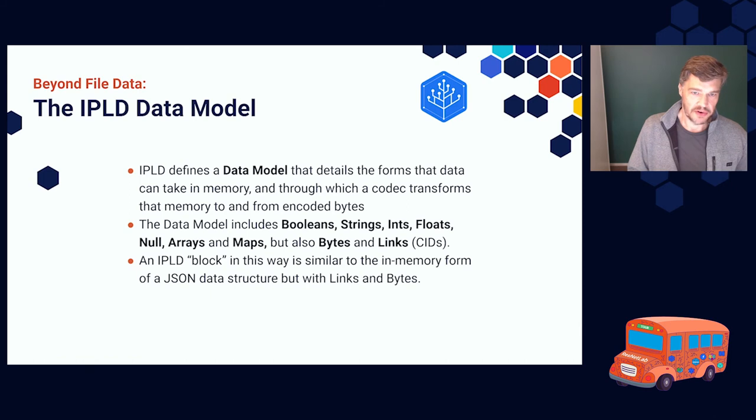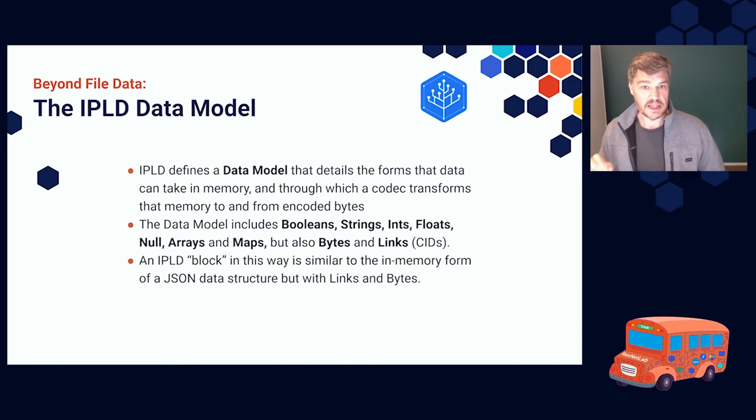Data model is very familiar. It includes Booleans, strings, ints, floats, nulls, arrays, and maps, just like JSON. It's actually really useful to think of the data model as the JSON data model, but it also includes bytes and links. JSON doesn't include bytes natively and it certainly doesn't include links. In the data model for IPLD, we include these things as well.